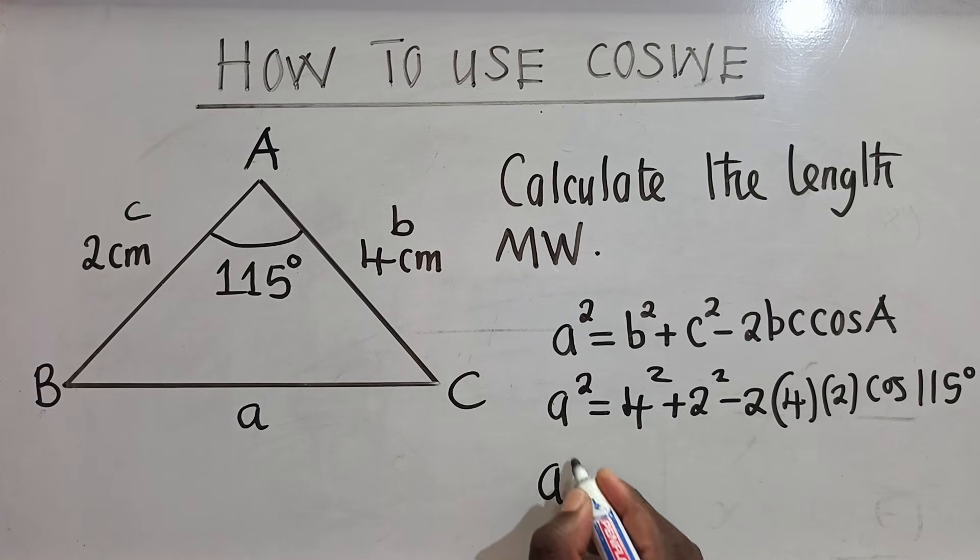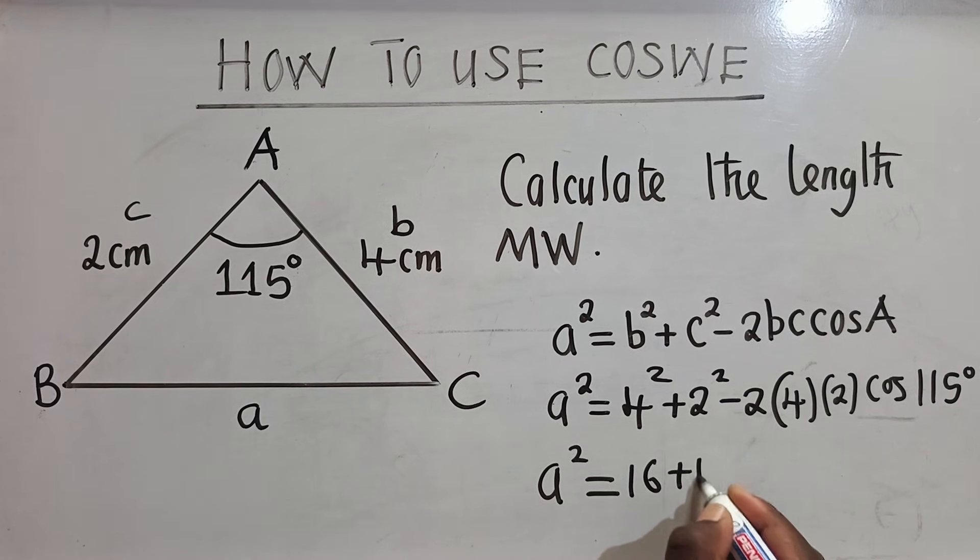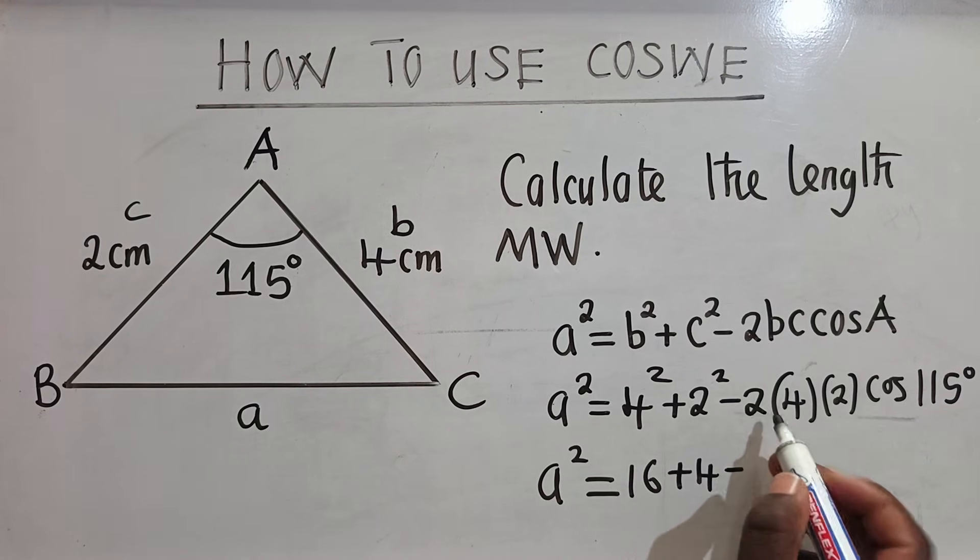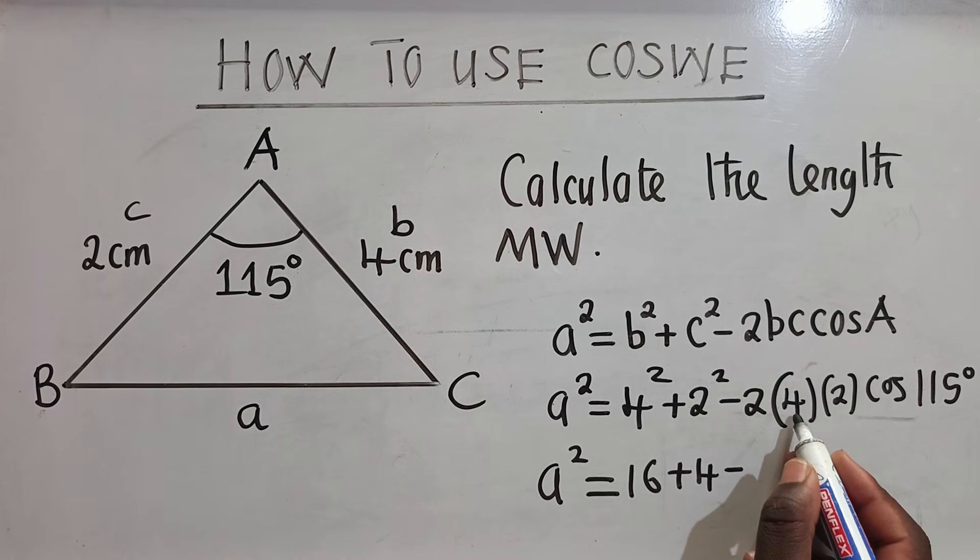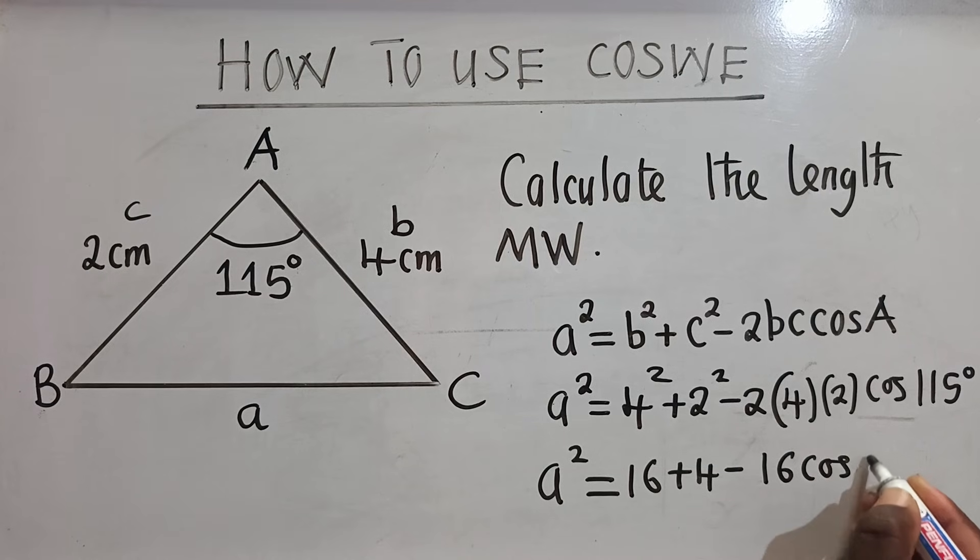So we can work out things. Here when we solve, this is giving us 16 + 4 minus, when we multiply here, 2 × 4 is 8 × 2, it's giving us 16. And then here, of course, 115 degrees.